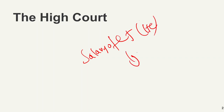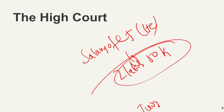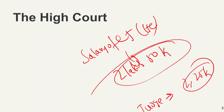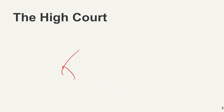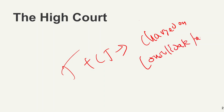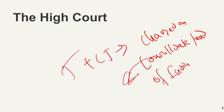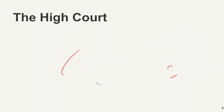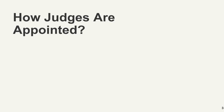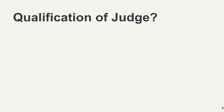The salary of the Chief Justice of a High Court is two lakh fifty thousand rupees, and the salary of a judge of a High Court is two lakh twenty five thousand rupees. Both salaries are charged on the Consolidated Fund of India.